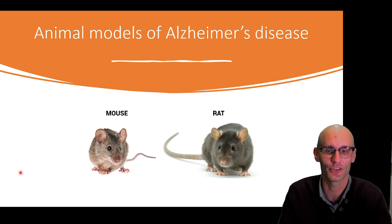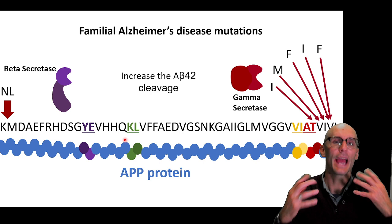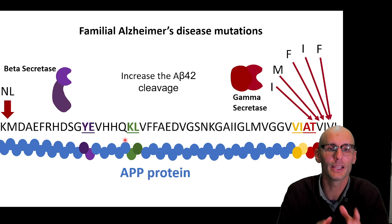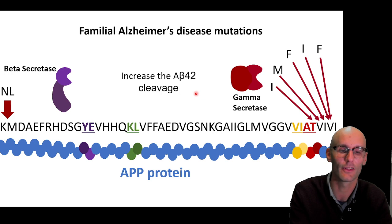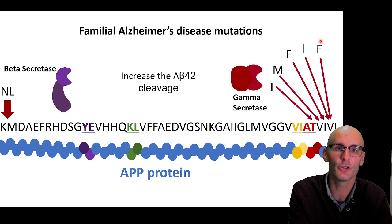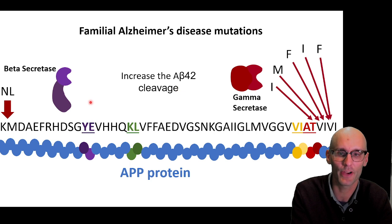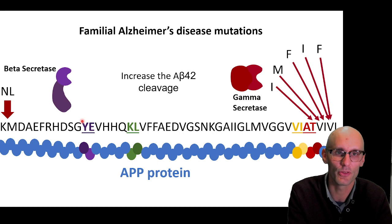Just a little refresher: there are mutations in the human genome that can guarantee you get Alzheimer's disease. These are called familial Alzheimer's disease mutations and most of them lie in the amyloid precursor protein, and they promote the production of the AB-42 cleavage product of the APP. Here's a range of mutations that can lead to gamma secretase cleavage to generate the AB-42 fragment, and here's a mutation that increases beta secretase cleavage to promote amyloid beta-42 fragment production.